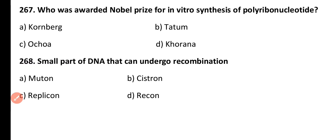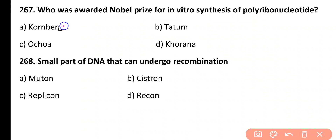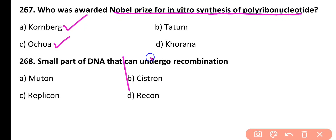Question 267. Who was awarded the Nobel Prize for in vitro synthesis of polyribonucleotide? Kornberg, Tatum, Ochoa, or Khurana? Correct answer is Option A as well as Option C — Kornberg as well as Ochoa. They both were awarded the Nobel Prize for in vitro synthesis of polyribonucleotide in 1959.